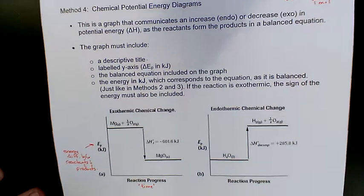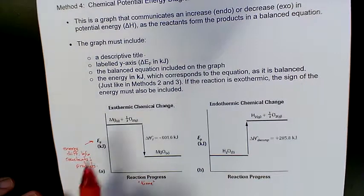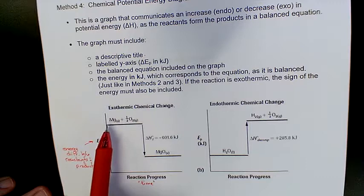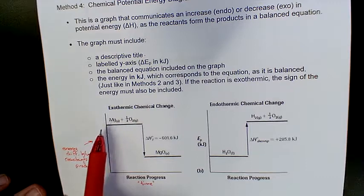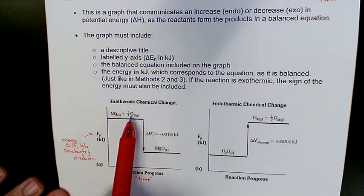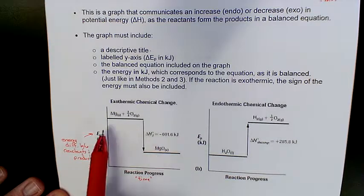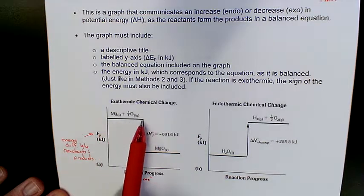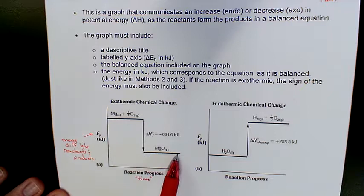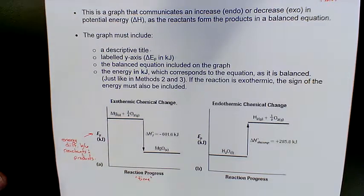So we label that, and then it's reaction progress or reaction coordinate. In other words, this is just time, and it's the time it takes for this reaction to complete. So if we take a look at the one we did earlier, when we took a look at magnesium, magnesium reacts with half a mole of oxygen to produce magnesium oxide and 601.6 kilojoules. So obviously, this exothermic reaction, there is an energy difference between reactants and products, and it is quantified as 601.6 kilojoules for this reaction.